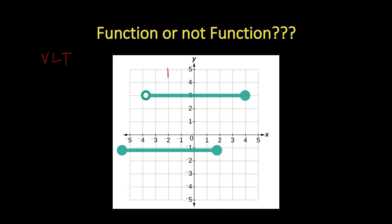Let me draw a straight line here. Assuming that's a straight line — if you look at it, there are two points intersected. You can draw the vertical line anywhere on your graph. I chose to draw it here, and we have two points intersected, so this becomes not a function. When you do the vertical line test, the vertical line must only pass through one point on the graph for it to be considered a function.